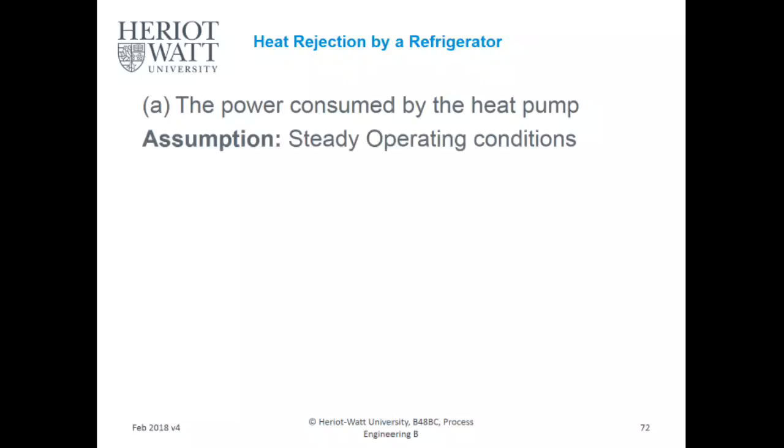The power consumed by the heat pump, assuming steady operating conditions with no storms, has a network input of QH from the higher quality heat reservoir, the house, with the COP of your heat pump. So 80,000 kilojoules per hour divided by 2.5 equals 32,000 kilojoules per hour.